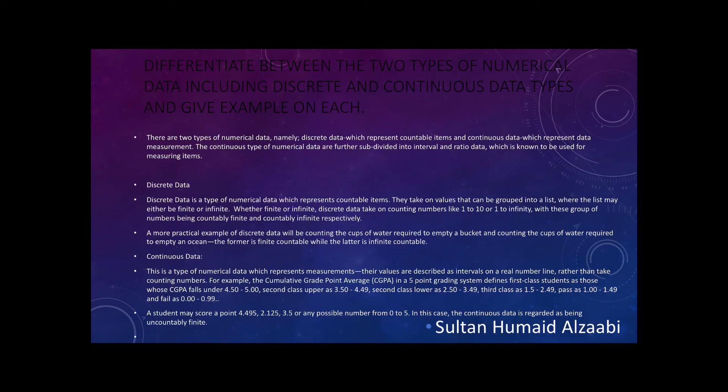Continuous data is a type of numerical data which represents measurements. The values are described as intervals on a real number line rather than counting numbers. For example, the cumulative grade point average in a five-point grading system defines first-class students as those whose GPA falls above 4.5.